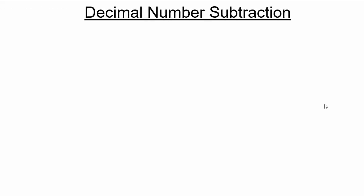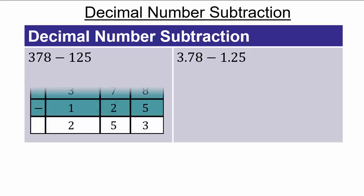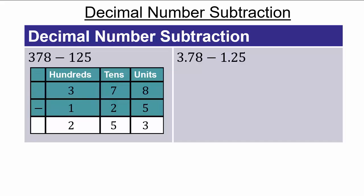Just like addition, we're going to look at decimal number subtraction by examining place values. In this first example, 378 minus 125, we line up the digits: 8 units, 7 tens, and 3 hundreds, taking away 5 units, 2 tens, and 1 hundred. 8 units minus 5 units gives 3 units, 7 tens minus 2 tens gives 5 tens, and 3 hundreds minus 1 hundred gives 200. So the answer is 253.